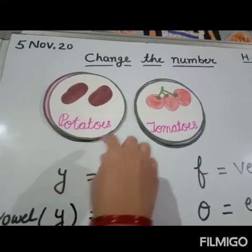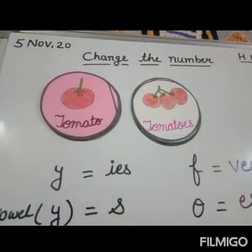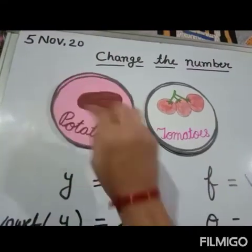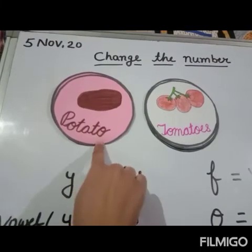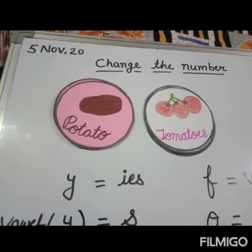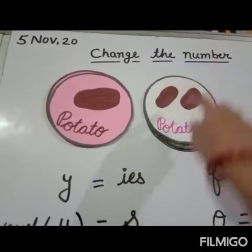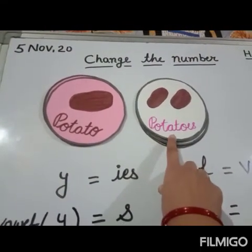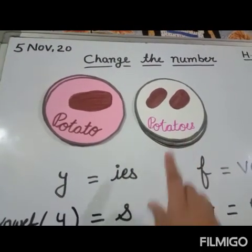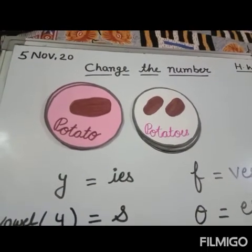Potato — again O comes at the end: P-O-T-A-T-O. So its plural form will be potatoes — P-O-T-A-T-O-E-S. Potatoes.